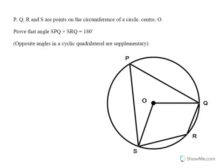Hi. In this tutorial, I'm hoping to show you a proof that is required at GCSE higher, that the opposite angles in a cyclic quadrilateral are supplementary. It means they add up to 180 degrees.